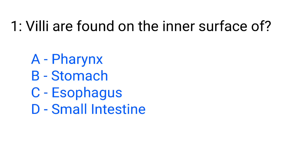Question number 1. Villi are found on the inner surface of: Option A. Pharynx, B. Stomach, C. Esophagus, D. Small intestine? The correct answer is option D. Small intestine.